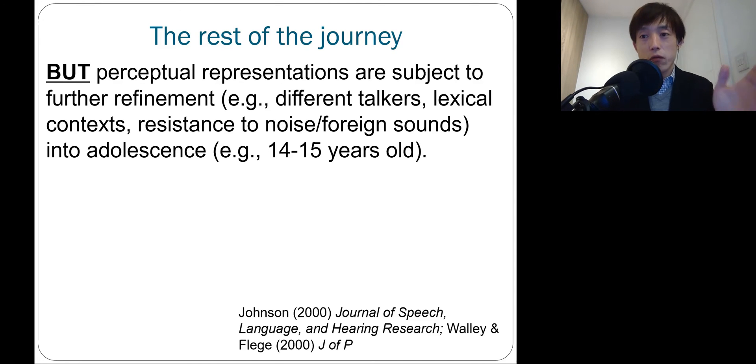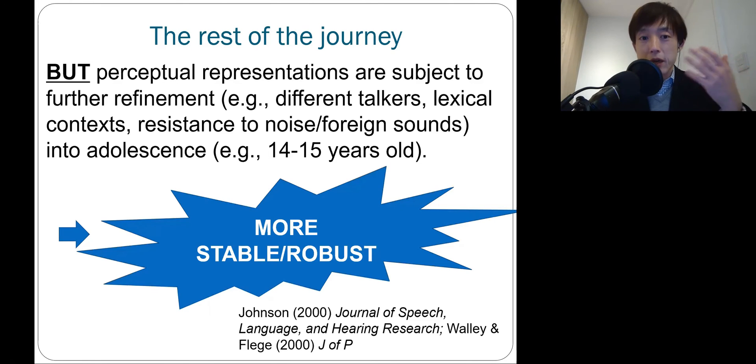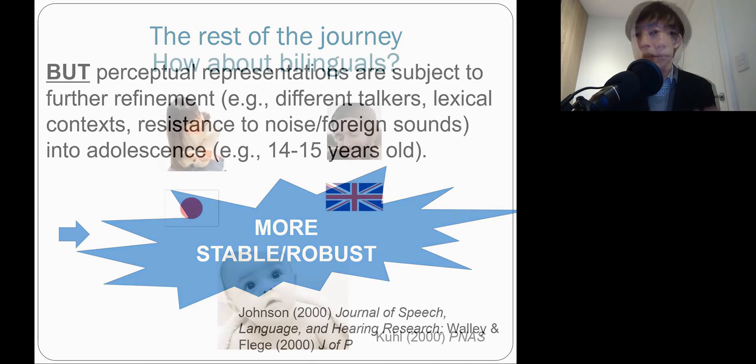But this also means that they should be able to ignore all the noise, even including foreign sounds that don't matter for their first language phonetic systems. And this process will continue up to puberty. And according to research evidence, basically their system becomes more stable and robust. In terms of vowels, research has shown that they will become more adult-like around nine to ten years old. And when it comes to consonants, performance becomes quite mature around 14 to 15 years old.